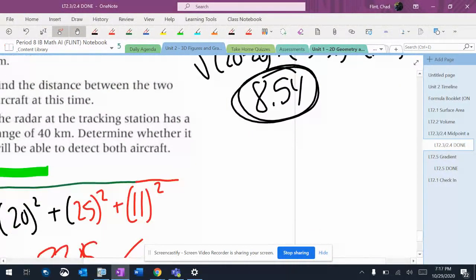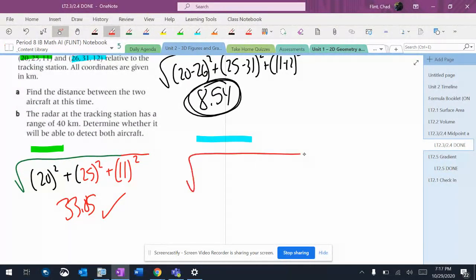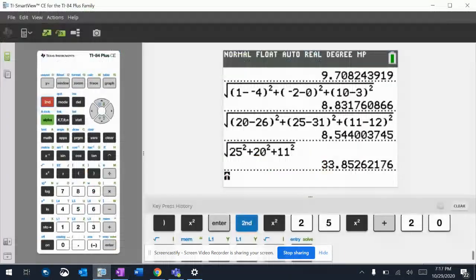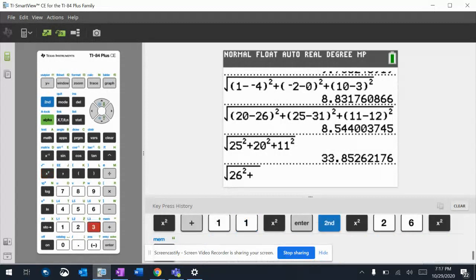If I want to find the blue aircraft, the blue one is going to be square root of 26 minus zero, which is 26 squared plus 31 squared plus 12 squared. You can see those numbers are all bigger than the other one, so this is going to be a bigger number, and it's probably going to be over 40.